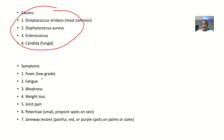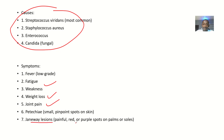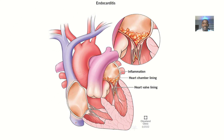Symptoms of subacute bacterial endocarditis include fever, body weakness, fatigue, weight loss, joint pain, petechiae — small pinpoint spots on the skin — and Janeway lesions, which are painful red or purple spots on the palms or soles of the individual.